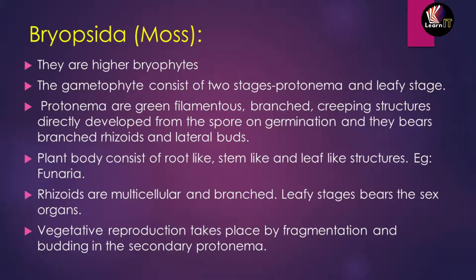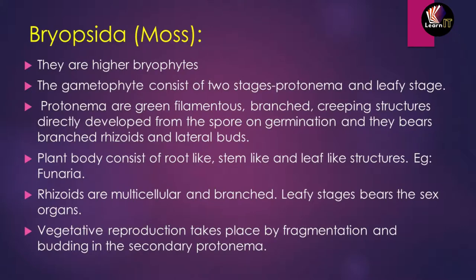The last class is Bryopsida, also called Mosses. These are the highest level of bryophytes. The gametophyte consists of two stages: the first is the protonema and the second is the leafy stage. Protonema is a green, filamentous, branched, creeping structure that develops directly from a spore and bears branched rhizoids and lateral buds. The plant body has root-like, stem-like, and leaf-like structures. For example, in Funaria, rhizoids are multicellular and branched. The leafy stage bears the sex organs. Vegetative reproduction occurs by fragmentation and budding in the protonema stage.